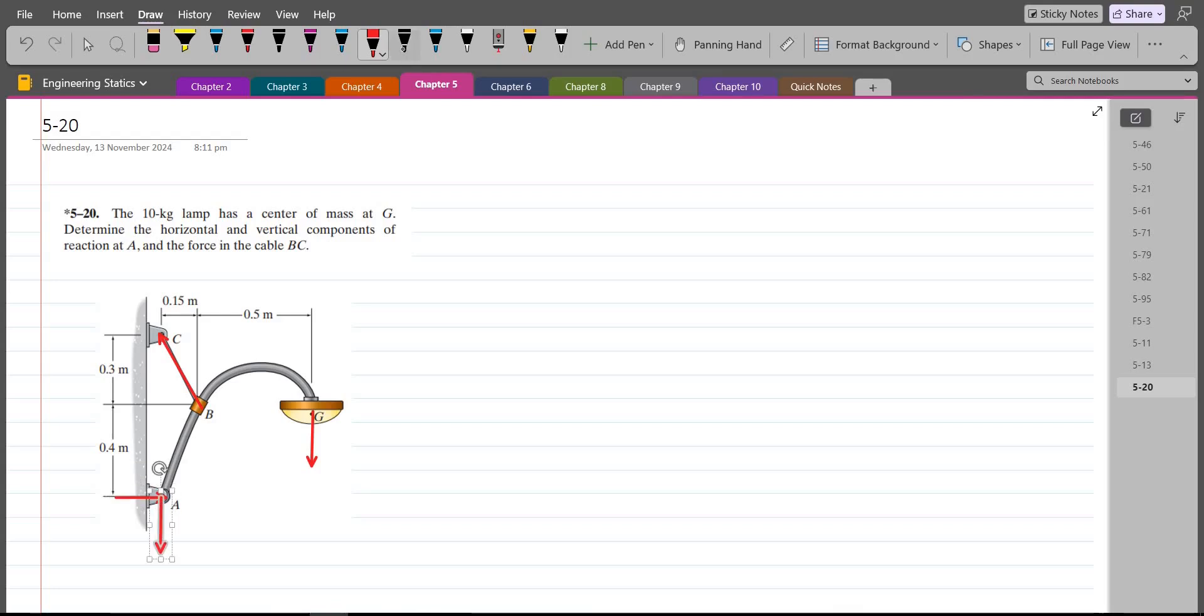Let's label them. So this right here is the weight which is 10 into 9.81 or 98.1 N. This is the weight of the lamp. This is the force FBC and this is AY and this is AX. Now I have to resolve the FBC force into its components.